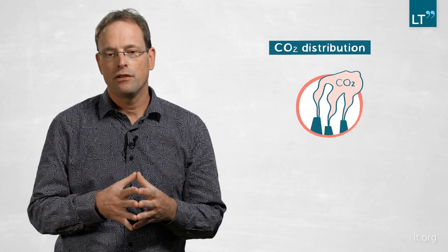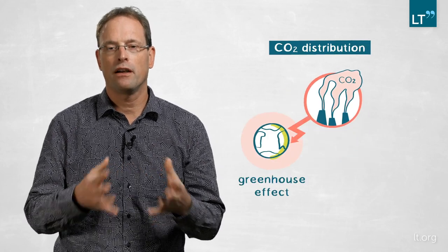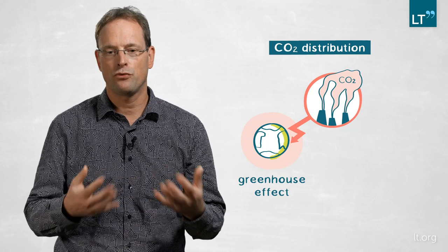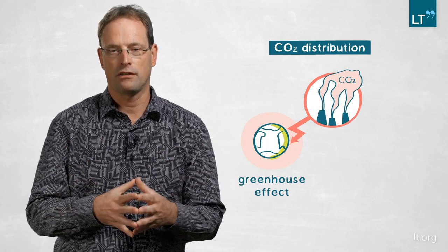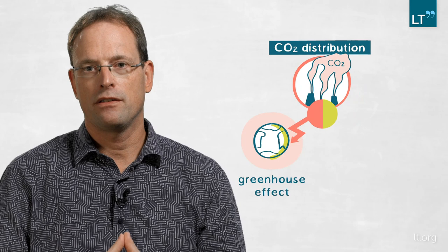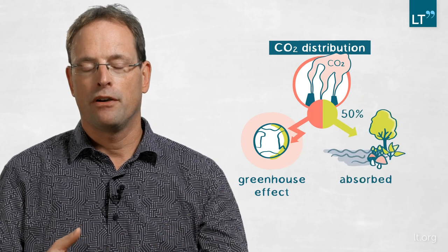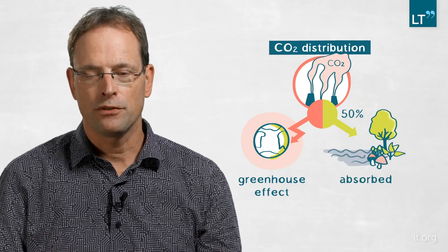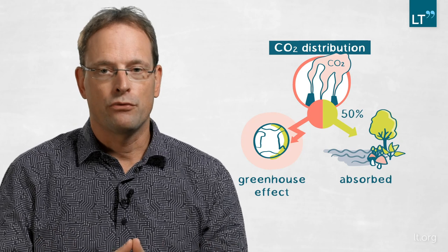Let me just give you one example. As you know, we all emit a lot of carbon dioxide to the atmosphere, causing the greenhouse effect. But luckily, the CO2 concentrations don't rise as much as we emit carbon dioxide. Roughly 50% is actually absorbed by the oceans and by the ecosystems, which help us mitigate the greenhouse effect.